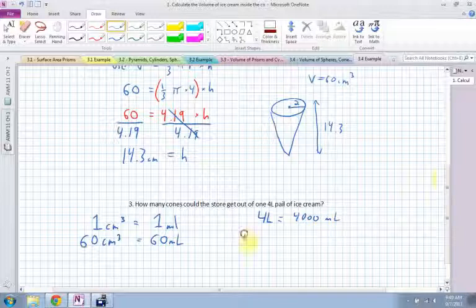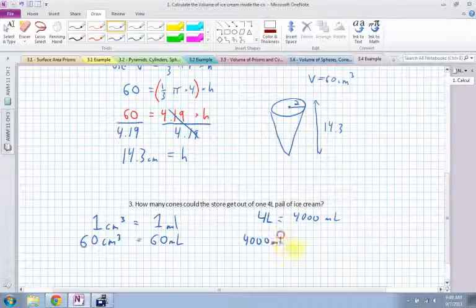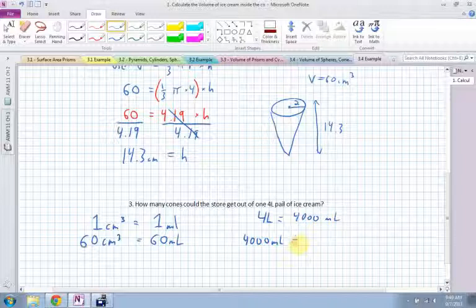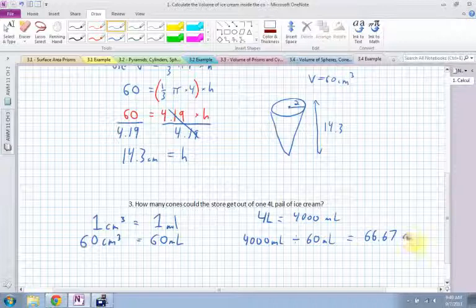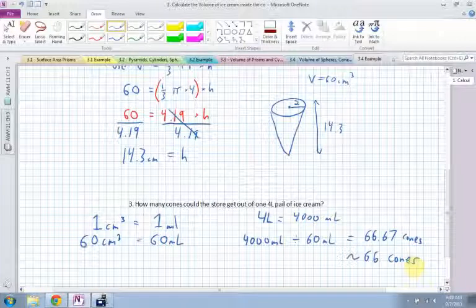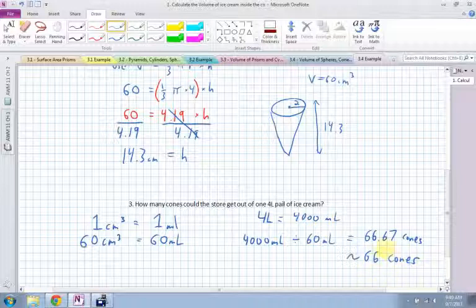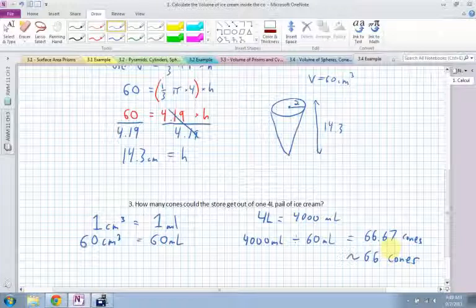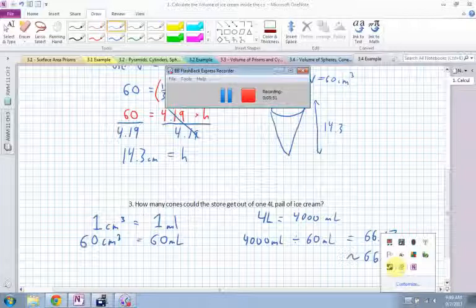So all I have to do is take 4,000 milliliters divided by 60 milliliters, and that should be equal to about 66.67 cones. So let's say 66 cones because you can't have 0.67 of a cone. A lot of the stuff in Math and this chapter, kind of think about it reasonably. Can you have 66.67 cones? Not really. You can have 66 cones and a little bit of ice cream left over for me. All right. So that's how you do that question. Thanks.